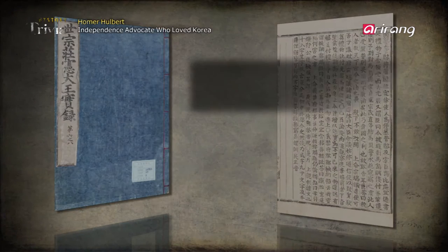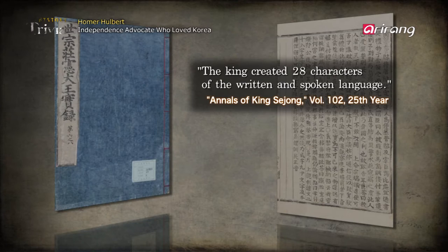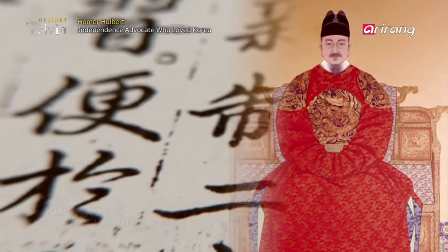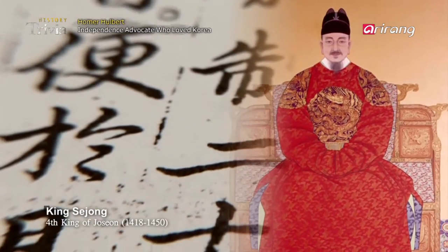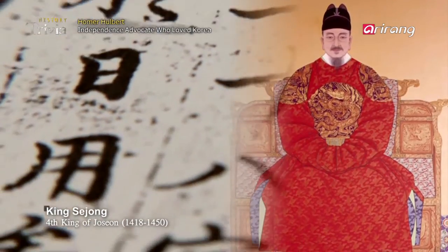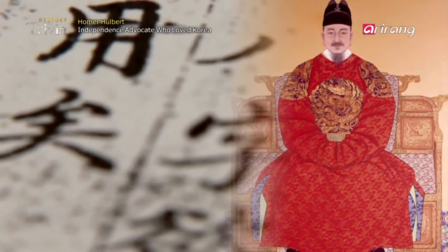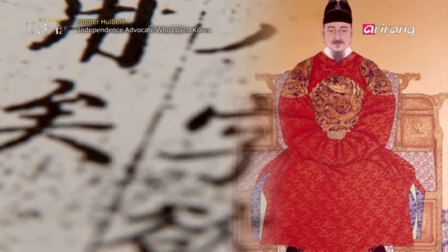In 1443, the annals of King Sejong record reads: the king created 28 characters of the written and spoken language. It states that King Sejong, the fourth king of Joseon, created Hangul, the Korean alphabet.